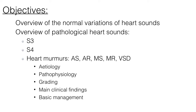This podcast will cover the normal heart sounds and some of its normal variations, go over two pathological heart sounds — S3 and S4 — and then the heart murmurs: aortic stenosis, aortic regurg, mitral stenosis, mitral regurg, and a congenital heart murmur, ventricular septal defect. I'll talk about how to characterise and grade a murmur, and individually go over the etiology, pathophysiology, main clinical findings, initial investigations and basic management.